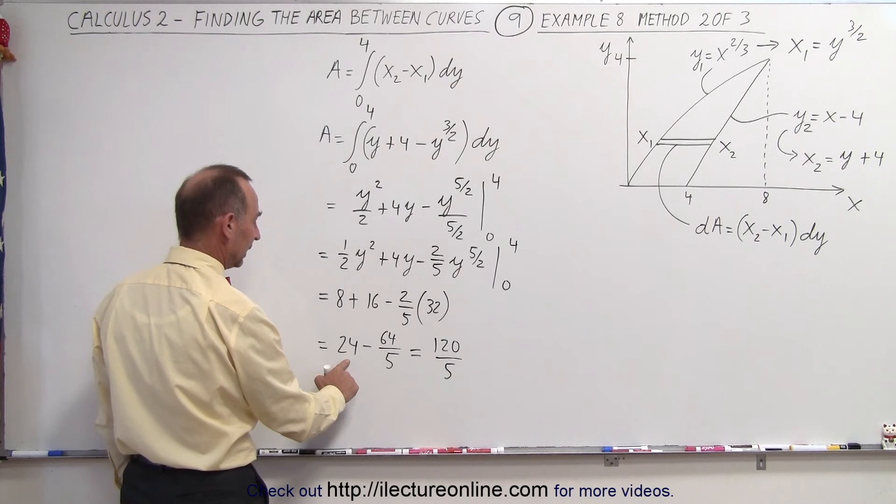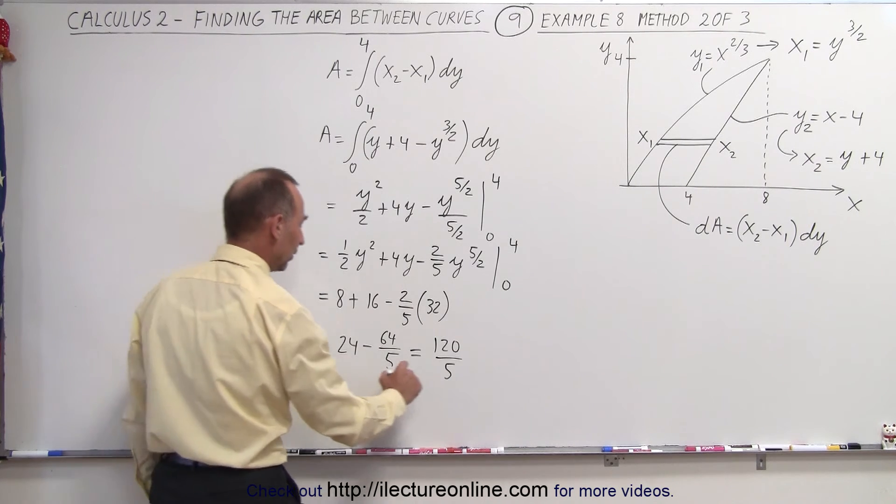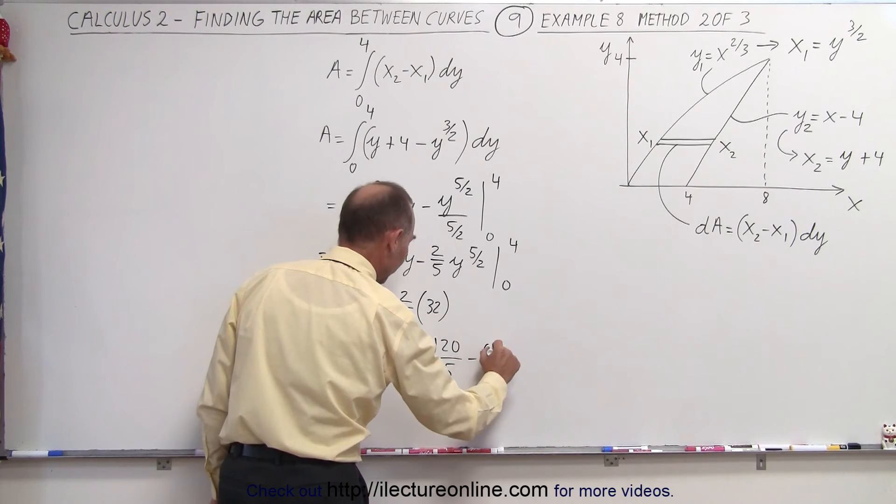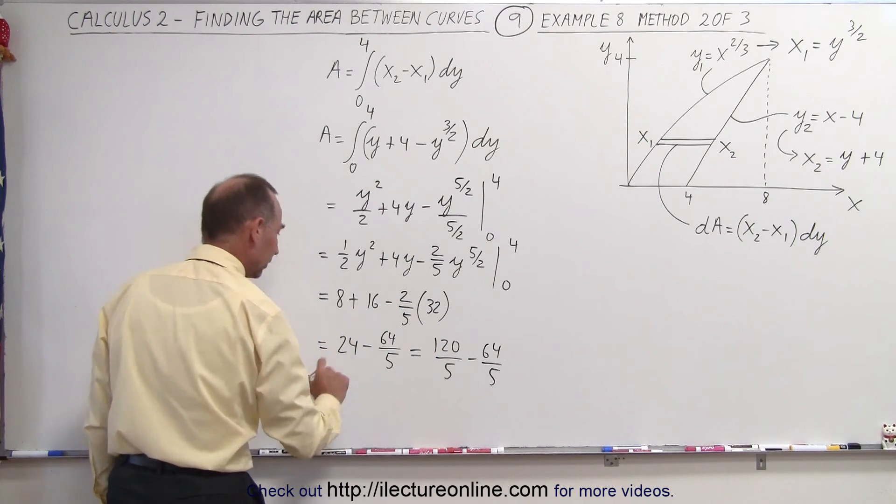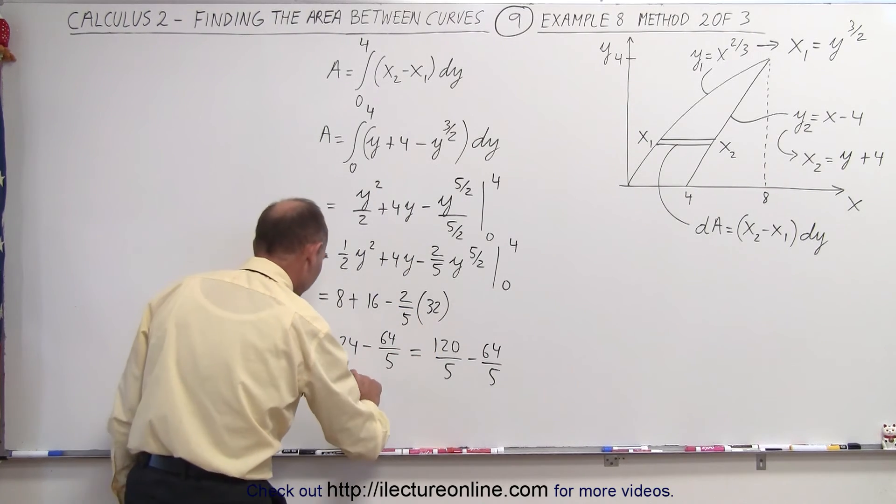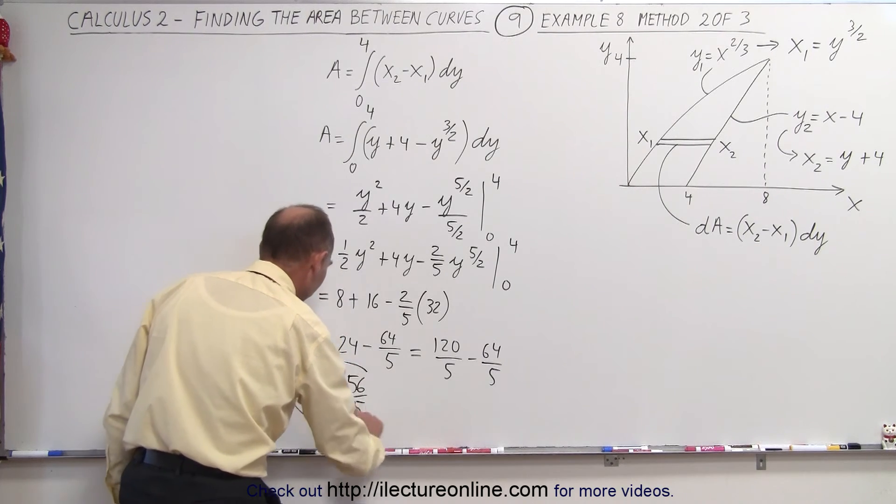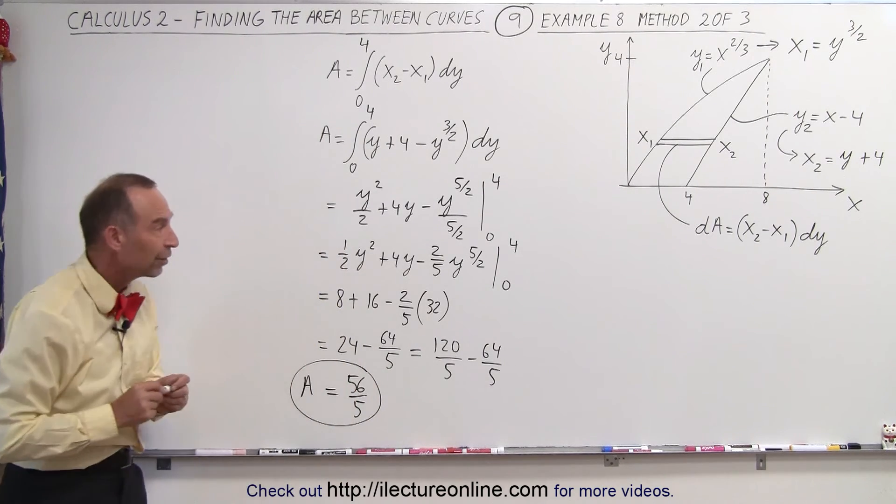So 120 minus 64 divided by 5 and sure enough the total area will then be equal to 56 over 5, exactly the same as we got in the previous video.